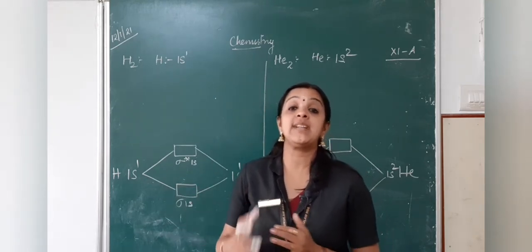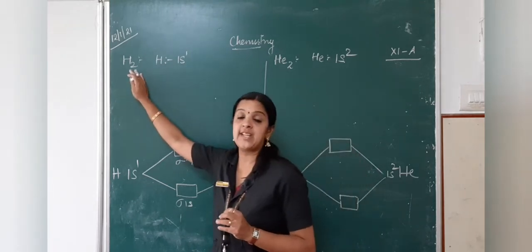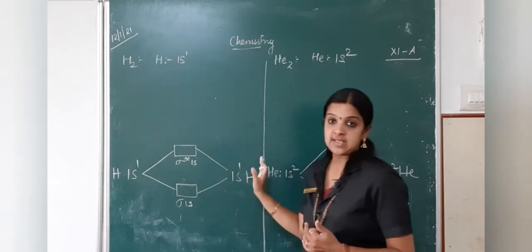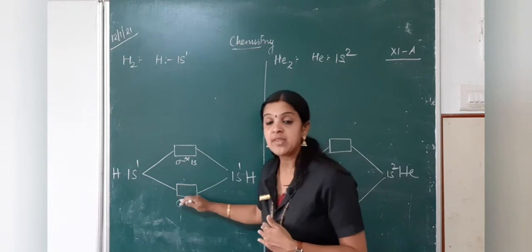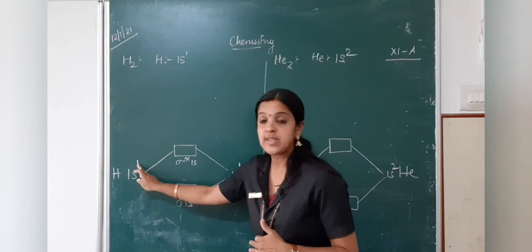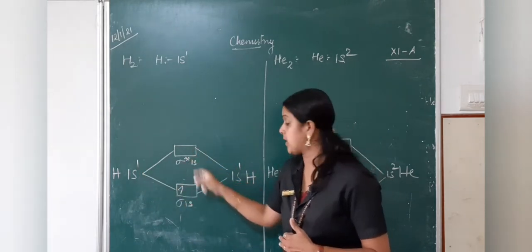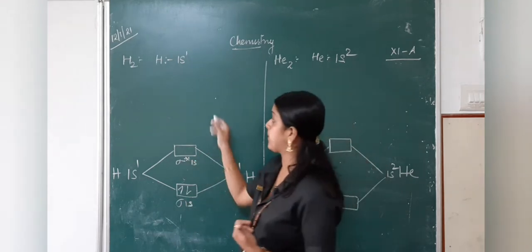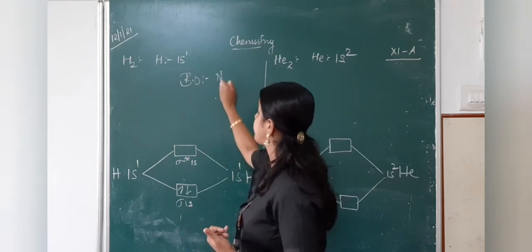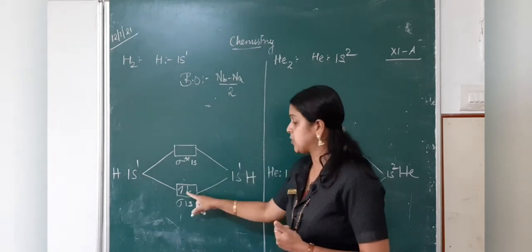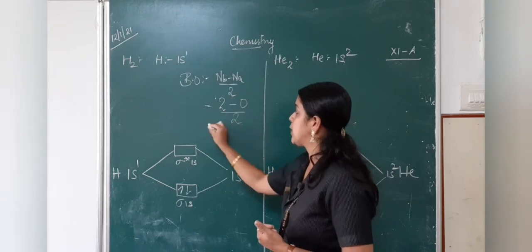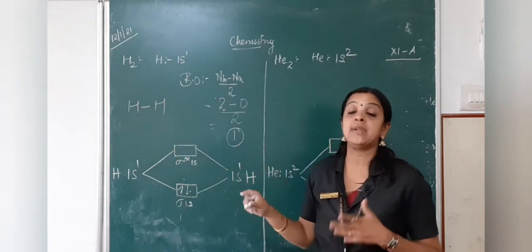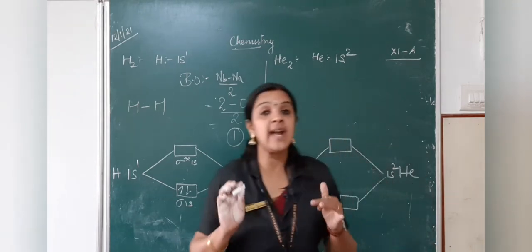We will now learn how to draw the molecular orbital diagram and calculate bond order. Let us take the example of H₂, where hydrogen's atomic number is 1, so its electronic configuration is 1s¹. With two hydrogen atoms, the first electron fills the bonding orbital and the second also occupies the bonding orbital. Bond order = (2 − 0) / 2 = 1, meaning a single bond exists between the two hydrogen atoms. It is a stable molecule with a positive bond order.